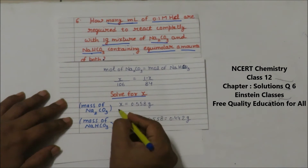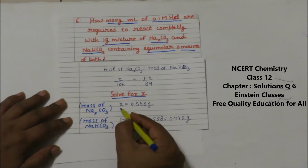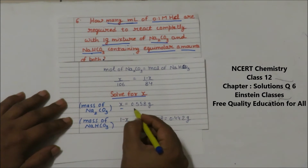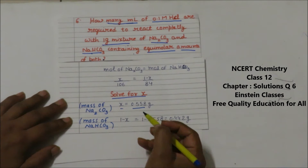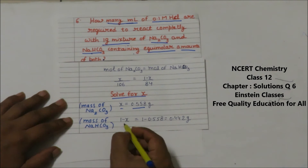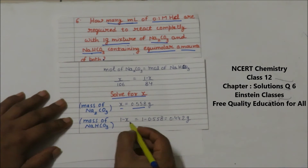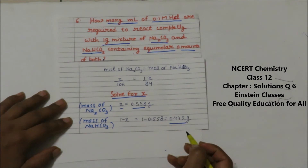Solving for X gives the mass of sodium carbonate as 0.558 grams, and therefore the mass of sodium bicarbonate is (1 − 0.558) = 0.442 grams.